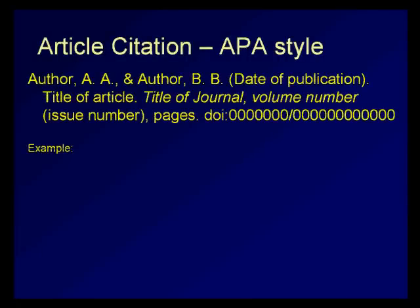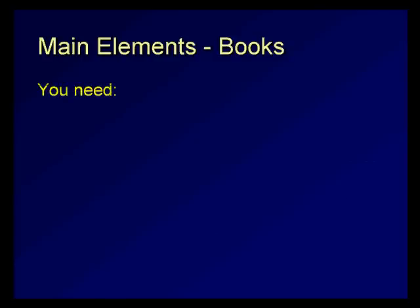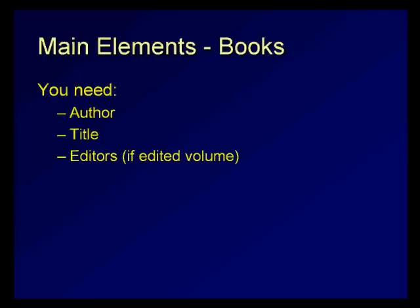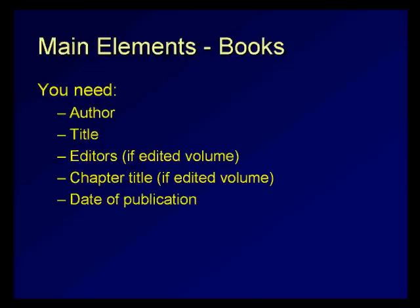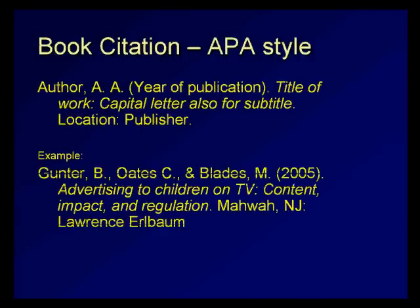This is what an APA reference list citation would look like for an article. The information you need for referencing books is very similar. You'll need the author, the title, the editors if the book is an edited volume, the chapter title — again if the book is an edited volume — the date of publication, the publisher, and the place of publication. This is what an APA reference list citation would look like for a book.